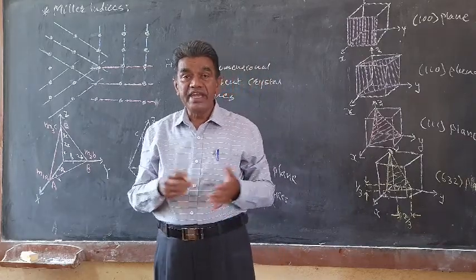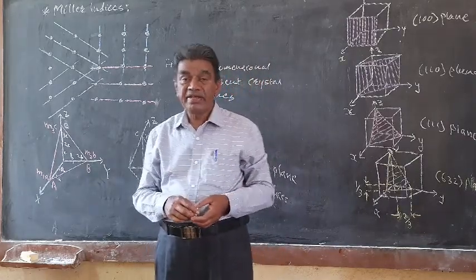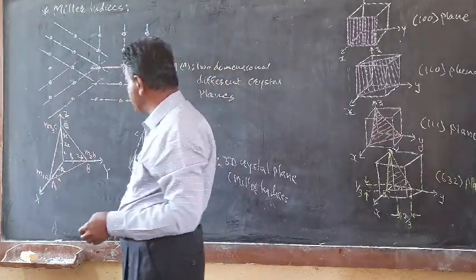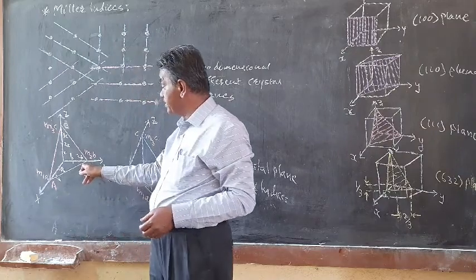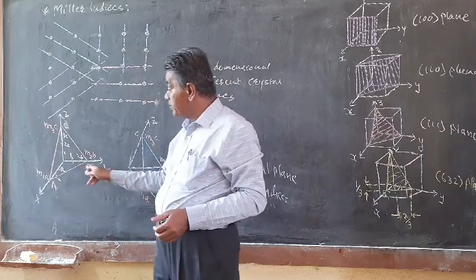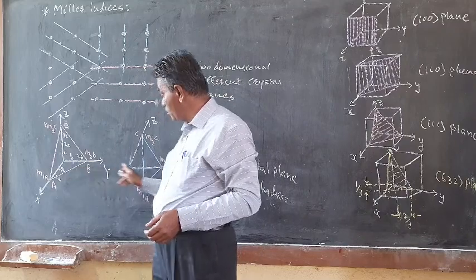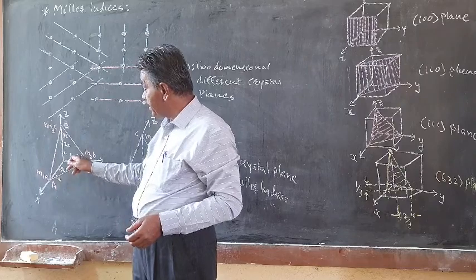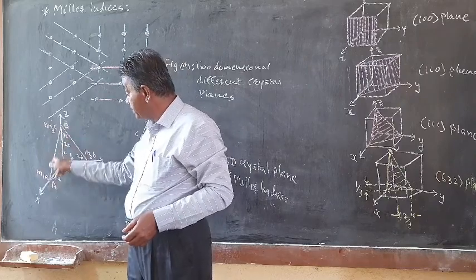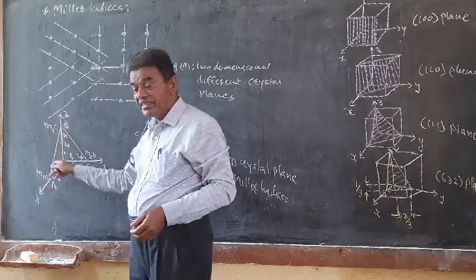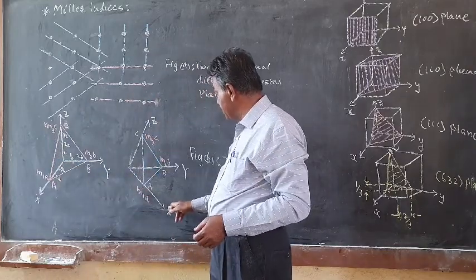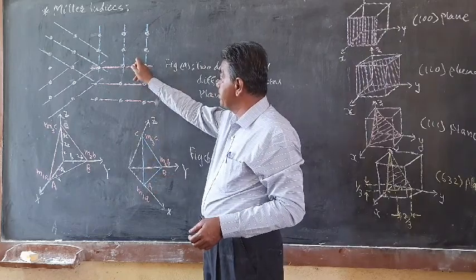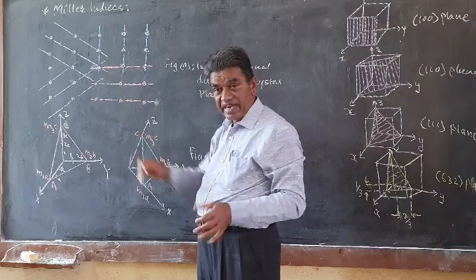Now, how do we index or identify these planes? This is given by the scientist Miller. The three-dimensional plane is drawn in these two figures — we can draw it one way or another. The x, y, and z directions are shown here. Consider the plane ABC; this plane may be referred to as EBC and so on depending on orientation.